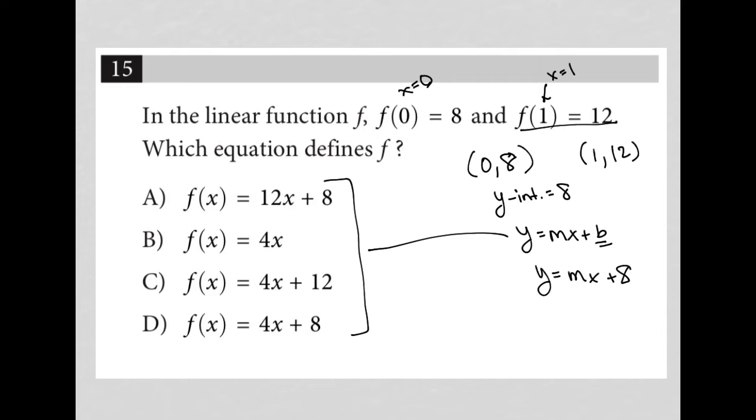So if I have 1 comma 12, how would that help me at all? Well, that could help me figure out my slope. And how do you find slope?